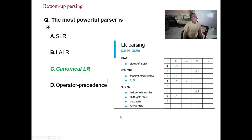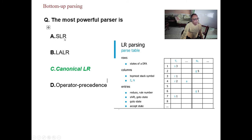The most powerful parser is canonical LR(1). The entries in the table should be either reduce, shift, go-to a particular state, or accept. So LR(1) is the most powerful; LALR is a close approximation; SLR is less powerful. Operator grammar is a bottom-up parser but has many restrictions — the operator must be between two variables, which is quite a restriction.